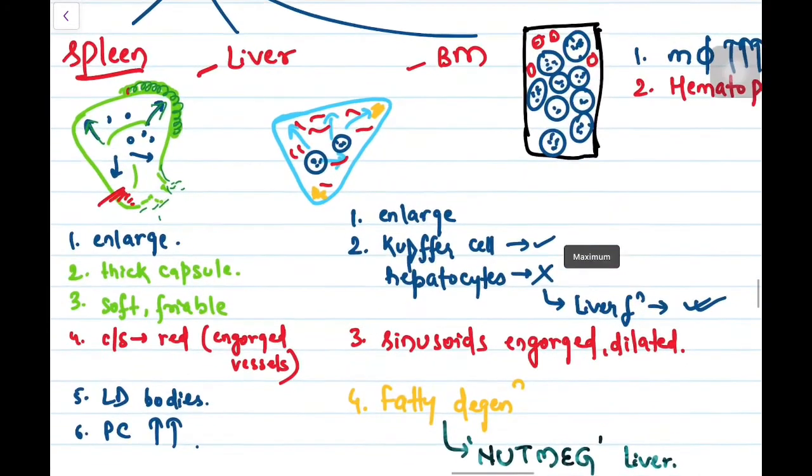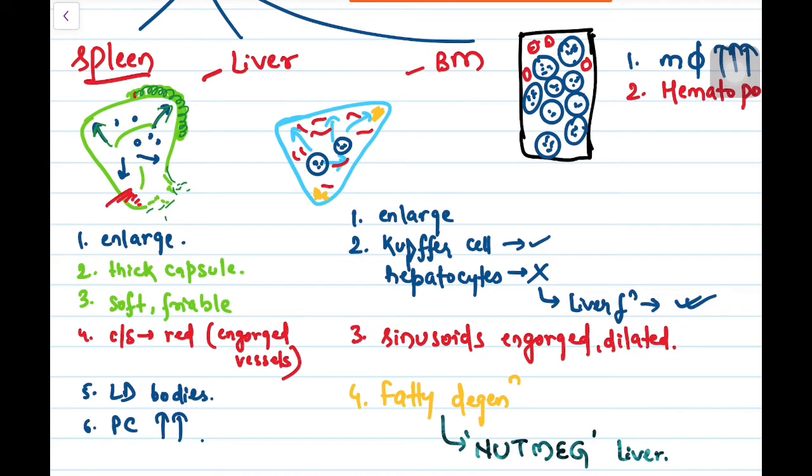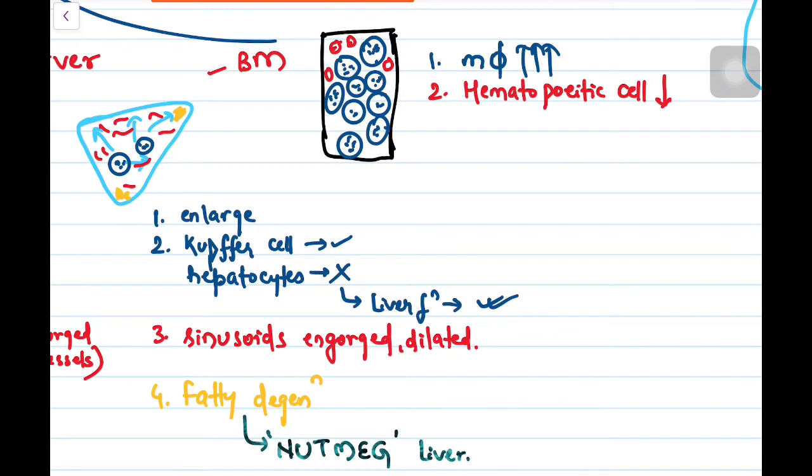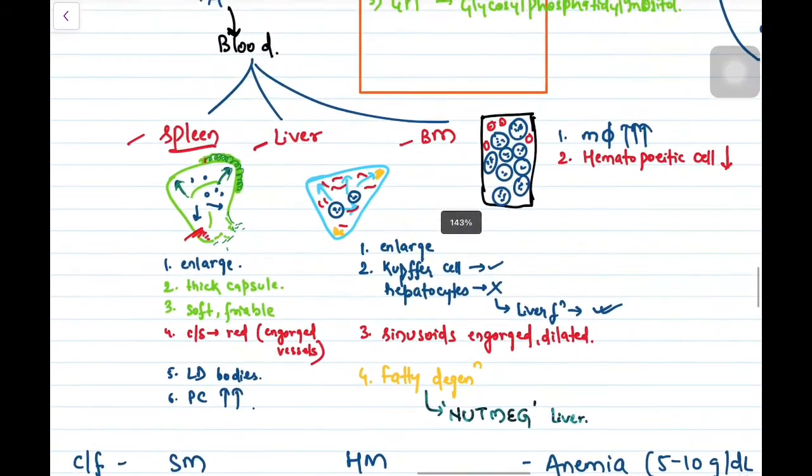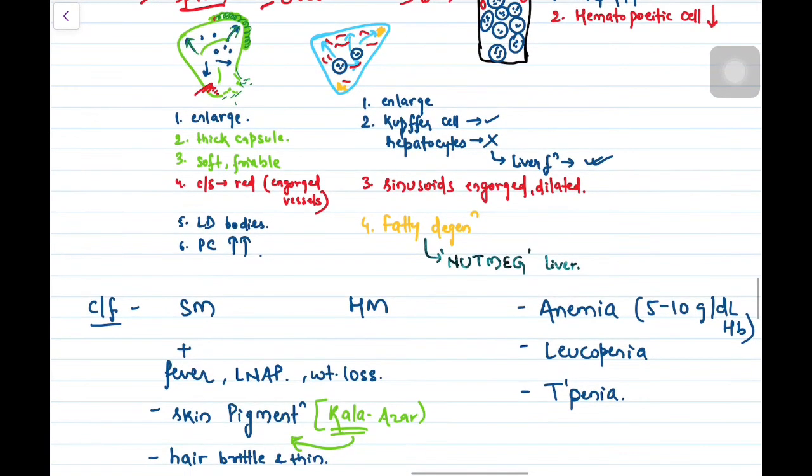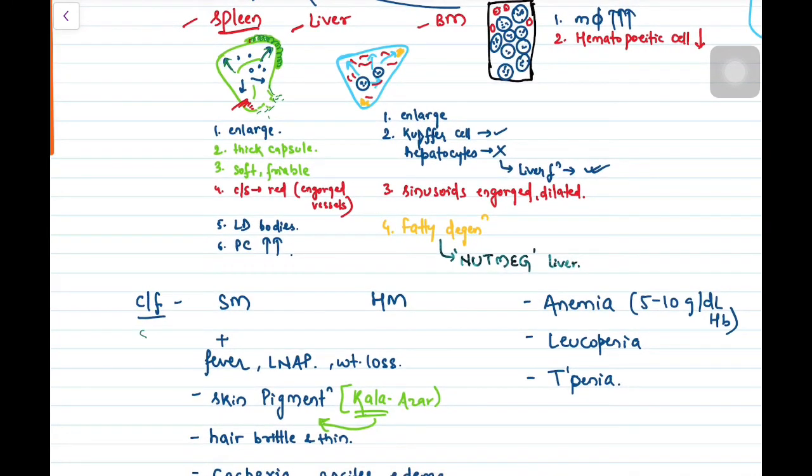In the liver, same mechanism. The macrophages of liver are Kupffer cells. So they will be high in number and contain LD bodies. Liver will also enlarge. There will be fatty degeneration forming nutmeg liver. The sinusoids are also engorged and dilated. But the point to note is the hepatocytes are not affected, so liver function as such will be intact. In bone marrow also the macrophages will increase in number, so cell lineage will be very low. There will be pancytopenia. From this all clinical features can be easily derived.